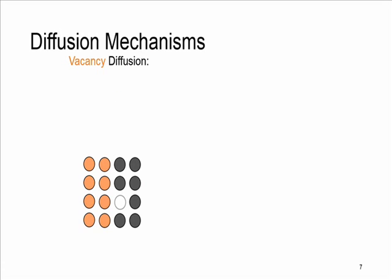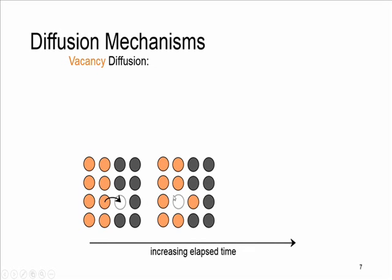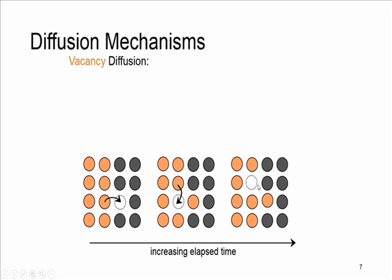The vacancy diffusion mechanism, as I said, involves atoms exchanging with vacancies. This applies to substitutional impurity atoms. As you can see here, we have a vacancy adjacent to this orange atom. The orange atom moves and migrates to this position. Now we have a vacancy here, so this atom goes down and we have a vacancy at this point. The gray atom migrates to this one. After some time these two are diffusing into each other. The rate of diffusion depends on the number of vacancies and the activation energy for the exchange.